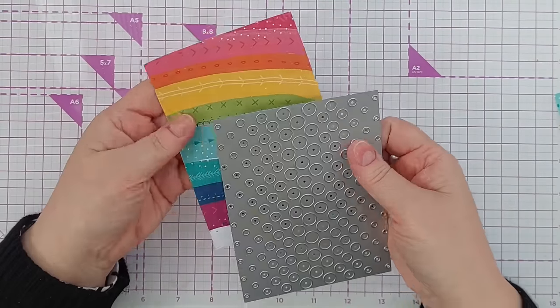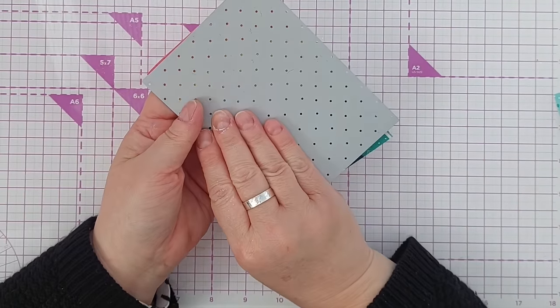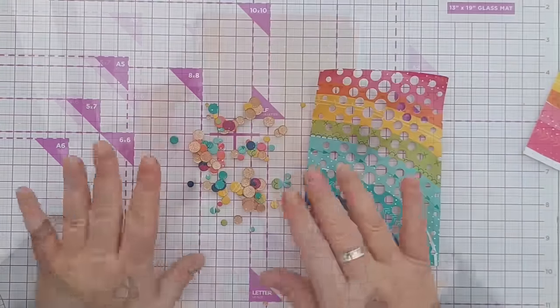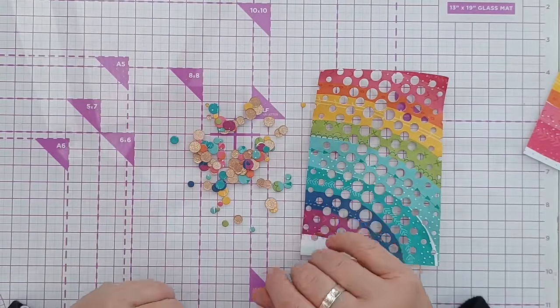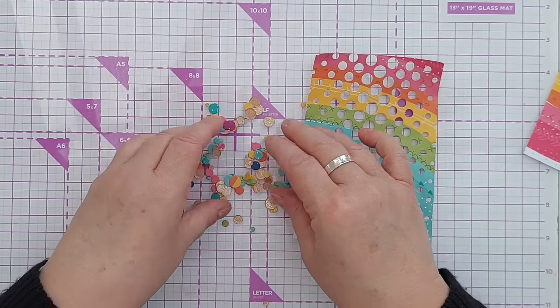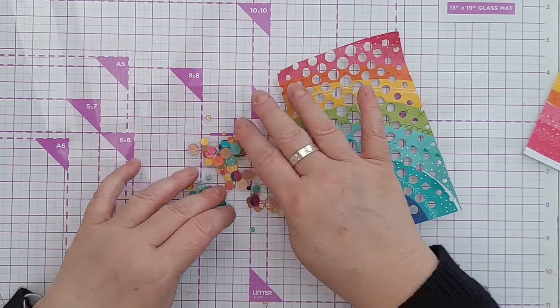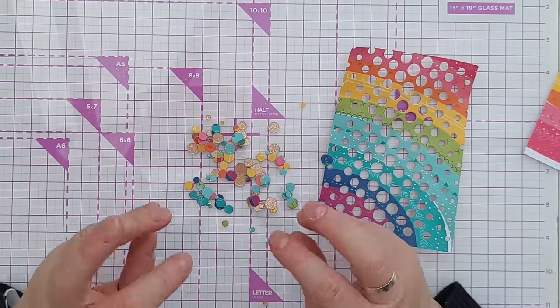So now what I'm going to do with this is run it through my die cutting machine with my circle die. So there we have a lovely pile of multicolored faux sequins that have gold on the other side so whatever way up they landed in your shaker they would look pretty.